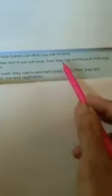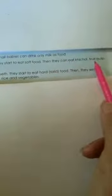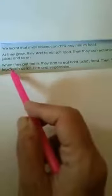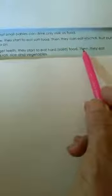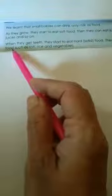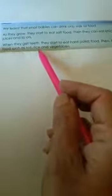We learn that small babies can drink only milk as food. As they grow, they start to eat soft food. Then they can eat khichri, fruit pulp, juices and so on. When they get teeth, they start to eat hard solid food. Then they eat food such as roti, rice and vegetables.